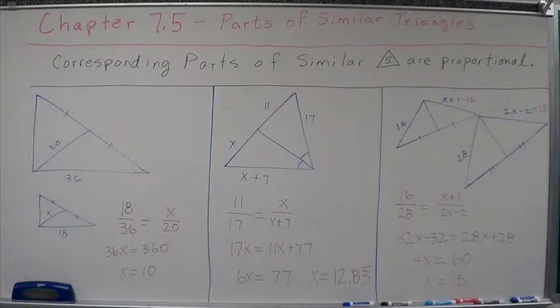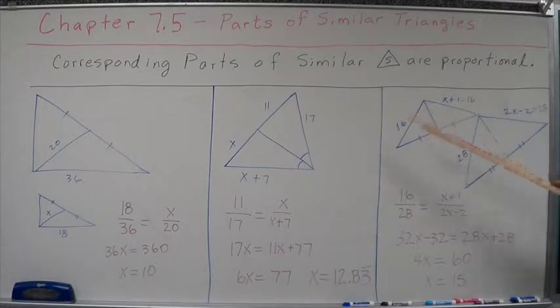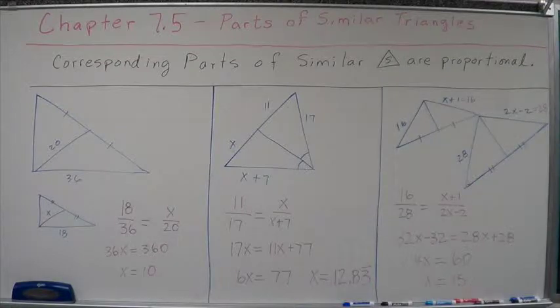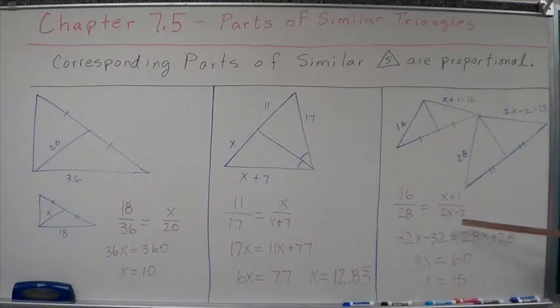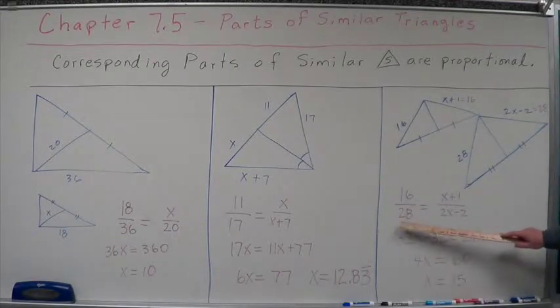And again, here's another one. We're going to be using proportional sides. Now, this one should be fairly apparent to us, but let's work it out. We've got a 16, we've got a 28 that are corresponding proportional sides. 16 is to 28 as x plus 1 is to 2x minus 2.